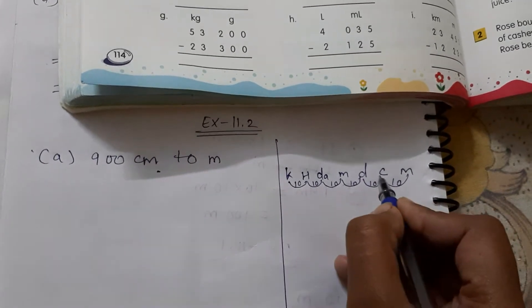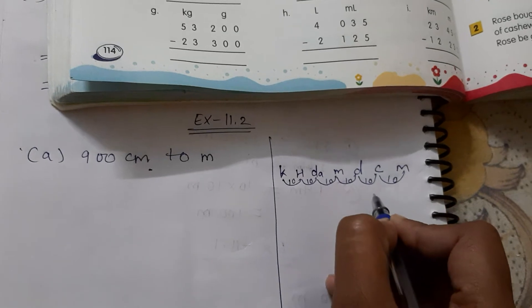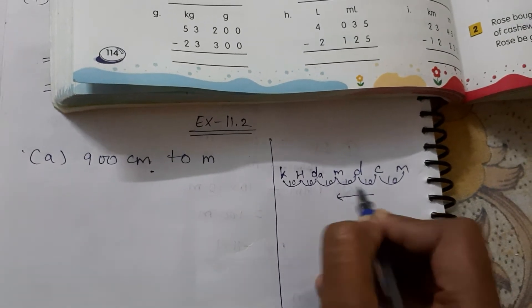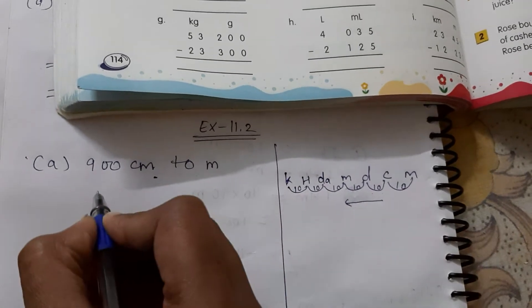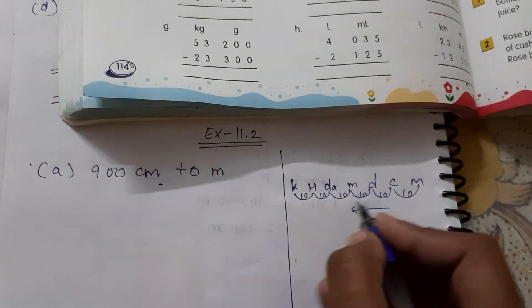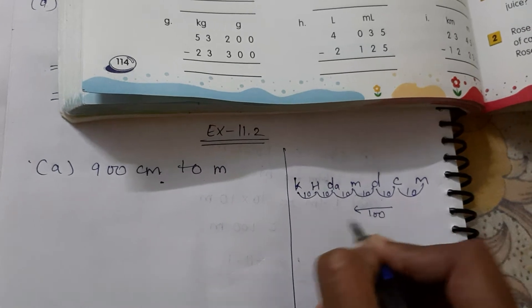Centimeter to meter. This is centi, and this is meter. So here we go to this side. How many times is it required? Two times 10. And in the opposite direction, it means divide. How many times? 100. So you can mark here 100.